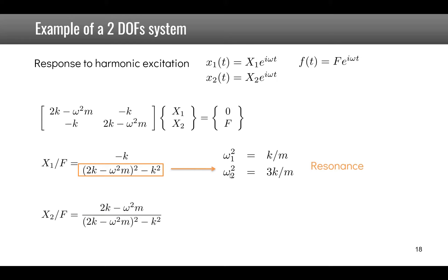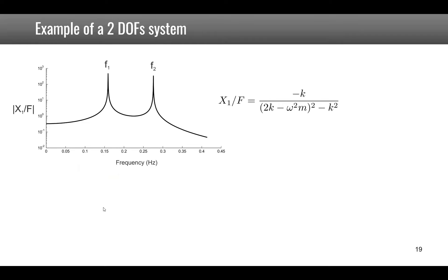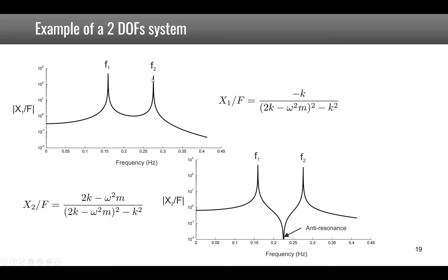For x2/F, we see the same resonances, but there is something special in the numerator: it can go to zero when 2k minus omega-squared m equals zero, i.e., at omega equals square root of 2k/m. This gives an anti-resonance — a frequency at which there is no motion of x2, while x1 continues to move.